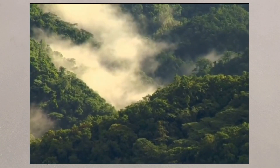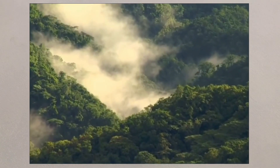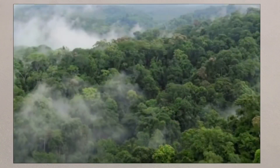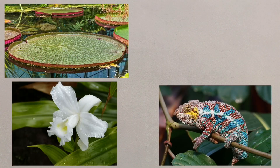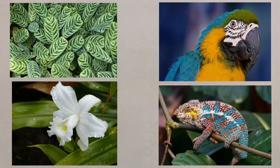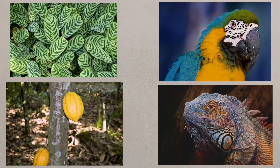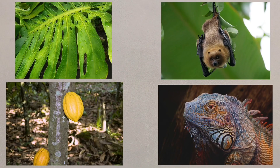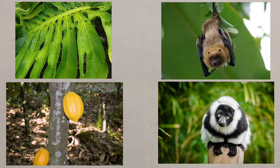Rainforests have a vast array of plants and animals, with the largest number of species of any biome. More than half the earth's plant and animal species live on around 7% of the earth's land surface, creating tremendous biodiversity.